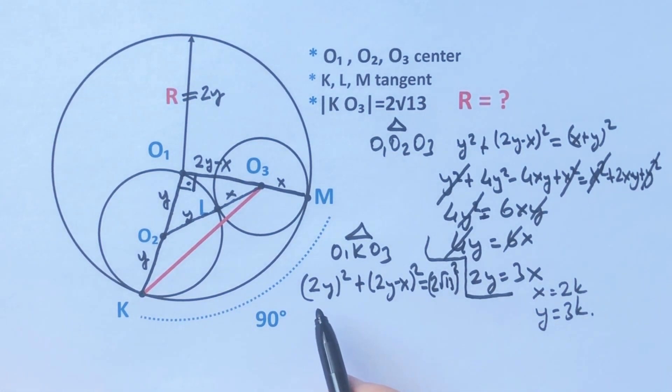So if we plug in this value to the formula: (2 times 3k)² plus (2 times 3k minus 2k) whole squared equals 4 times 4 times 13.